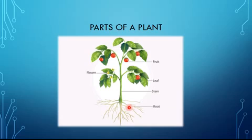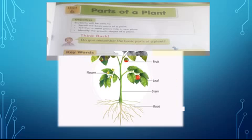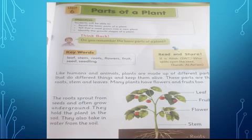The root holds the plant underground and absorbs water from the soil. The second part, the stem, stands the plant straight on the ground. The third part is the leaf — the leaf makes food for the plant using sunlight and air. The fourth one is the flower. Some flowers change into fruit, and we get fruit and vegetables from the plant.